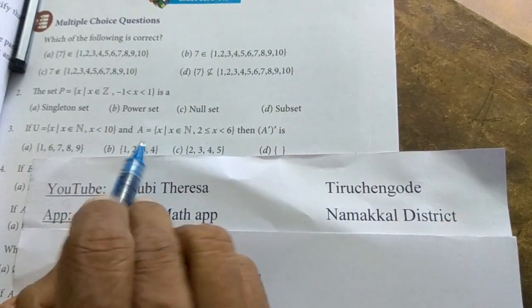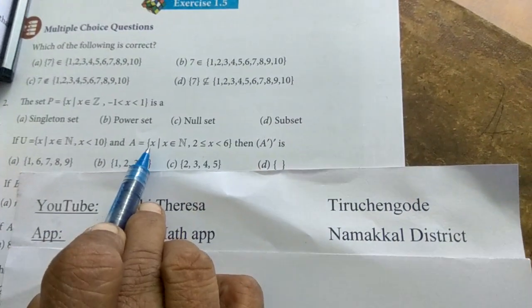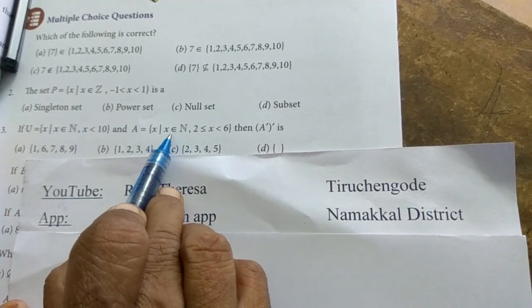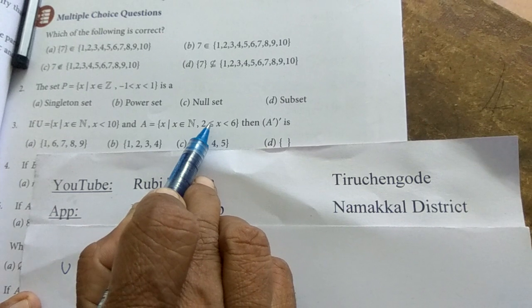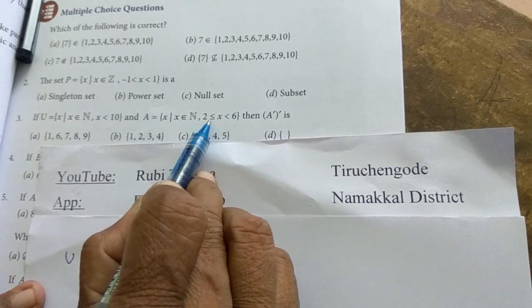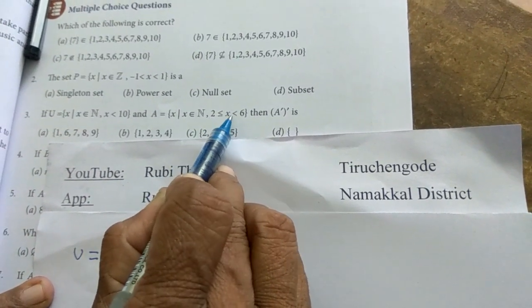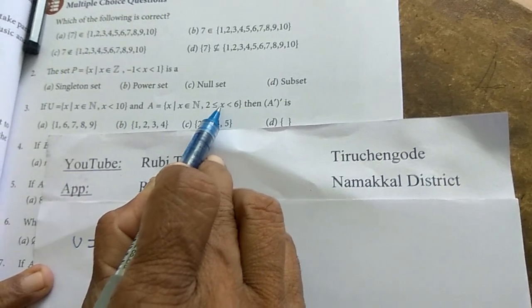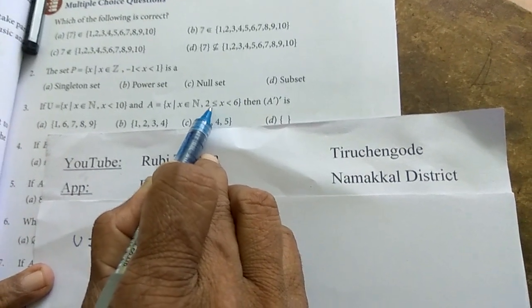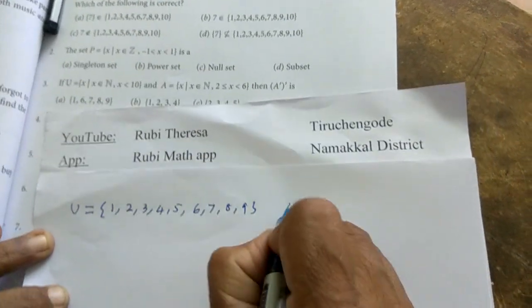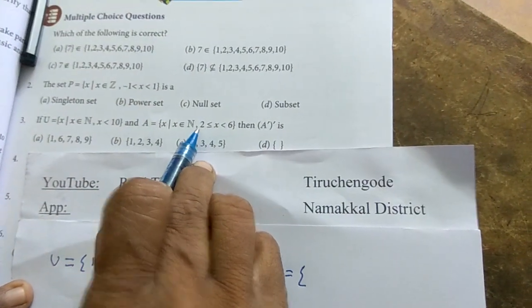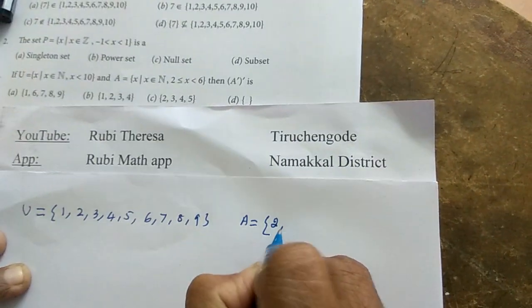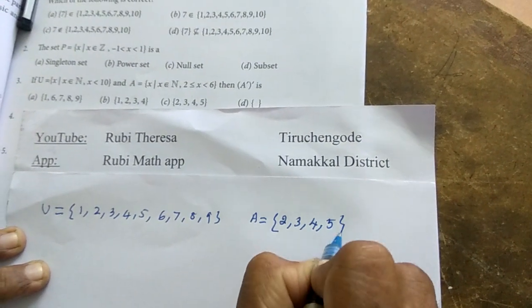Next one, A equals x such that x is an element of N, natural numbers. x is greater than or equal to 2, less than 6. x is greater than or equal to 2. So A equals, x equals 2. So starts with 2, 3, 4, 5.